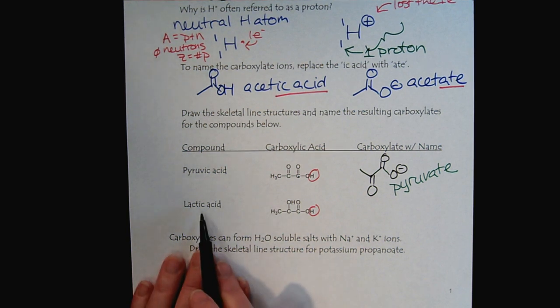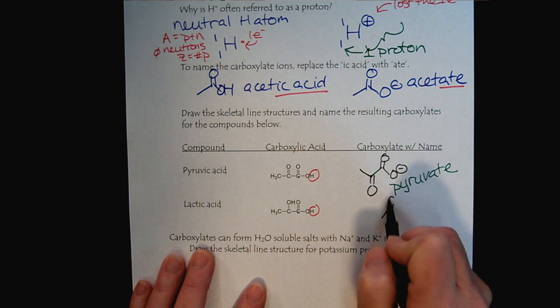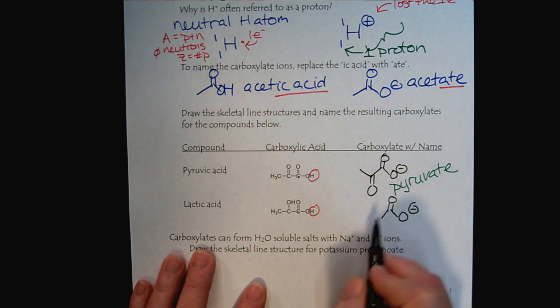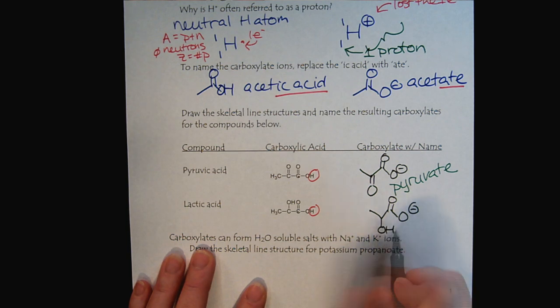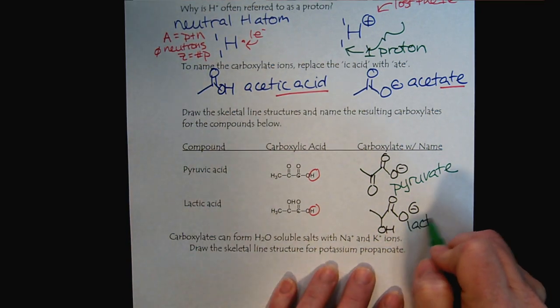And then here's lactic acid, and so we'll show the carboxylate there as well. And this time we also have three carbons, but here we had an alcohol group instead of a ketone. So if this is called lactic acid, then the carboxylate would be referred to as lactate.